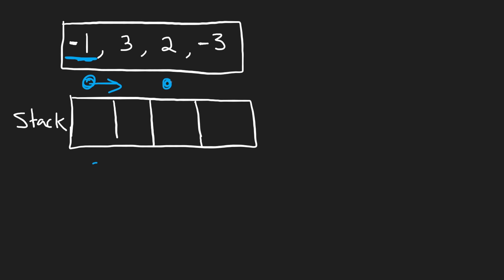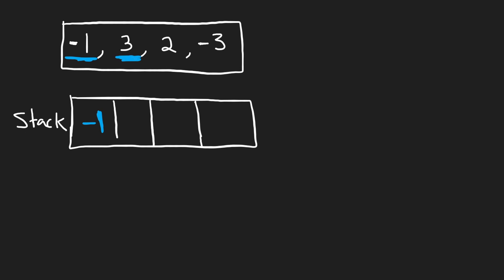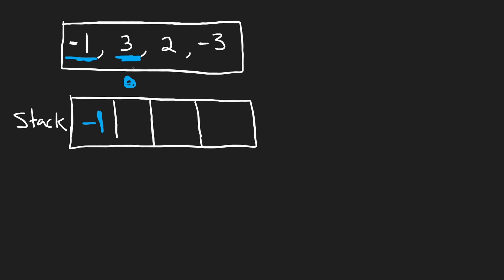If it was moving to the right, it would be possible that another asteroid could be coming towards it, and there could be a collision. But in this case, there's just no collision. Let's go ahead and add negative 1 to our stack. Next, let's look at 3. This asteroid is moving to the right, and the most recent asteroid we added was moving to the left, so there's not going to be a collision. Let's add 3 to the stack.